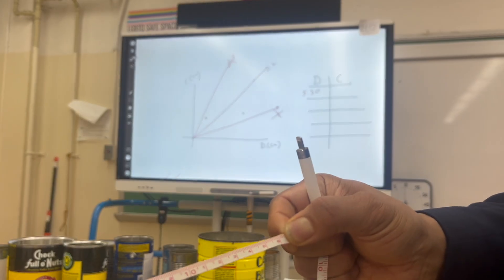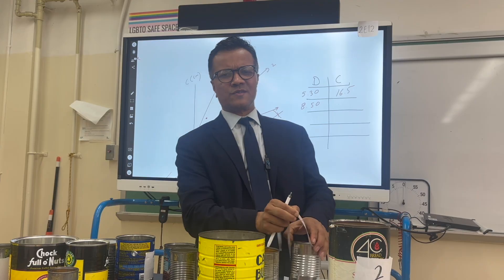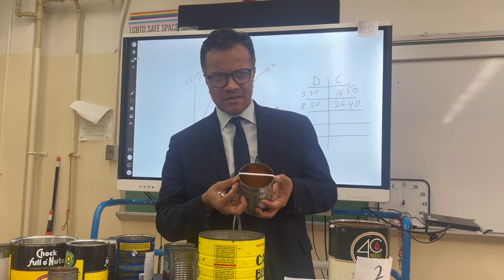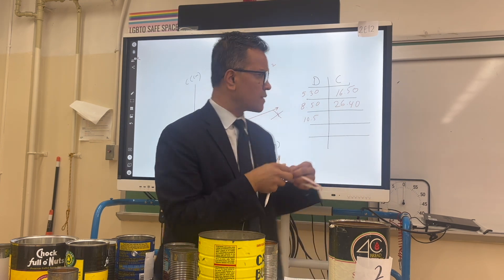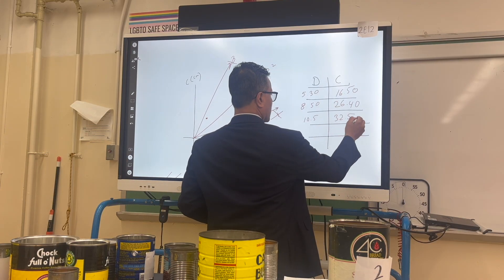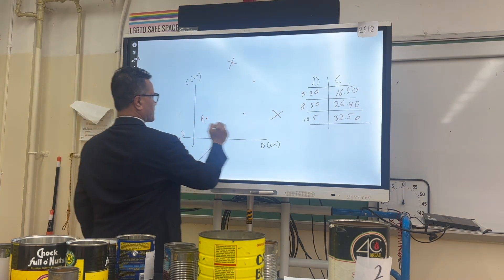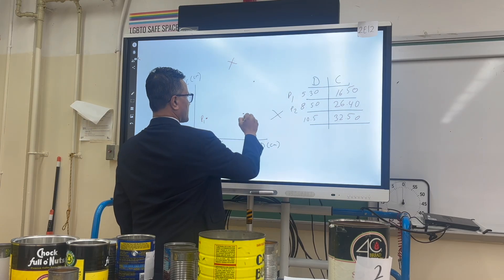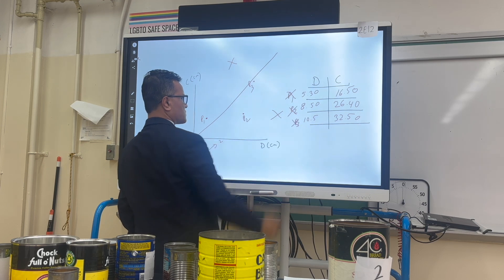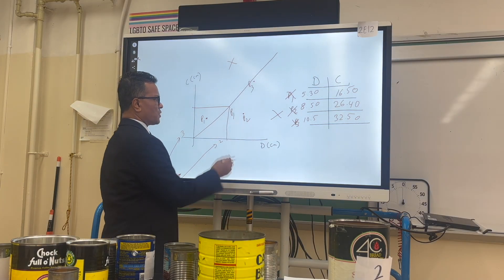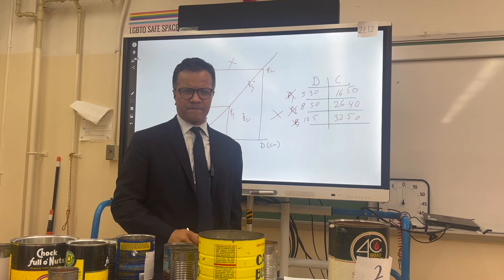From the example measurements: circumference values are 16.5, 26.4, and 32.5, with corresponding diameters of 5.3, 8.5 (approximately 10.5 recorded), and 10.5. These three points are plotted on the graph. When finding the slope, I cannot use those three plotted data points — I must pick two separate points from the best-fit line, called point one and point two.